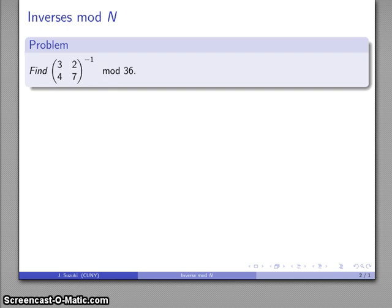So here I have a 2 by 2 matrix, 3, 2, 4, 7, and I want to find the inverse, but what we'll do that's a little bit different here is we'll try and find this inverse mod 36.